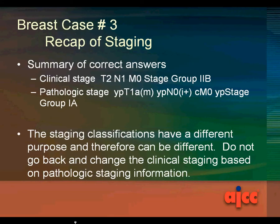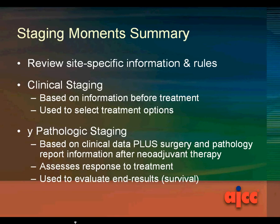Summary of the correct answers: the clinical stage is T2, N1, M0, stage group 2B. The pathologic stage is YPT1A(m), YPN0(i+), clinical M0, and YP stage group 1A. The staging classifications have a different purpose and therefore can be different — do not go back and change the clinical staging based on pathologic staging information. Clinical staging is based on information before treatment and is used to select treatment options. Y-pathologic staging is based on clinical data plus surgery and pathology report information after neoadjuvant therapy; it assesses the response to treatment and is used to evaluate end results and survival.